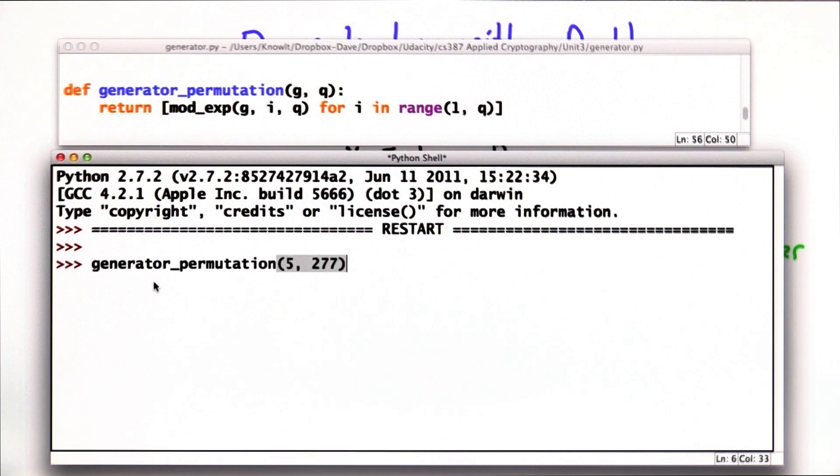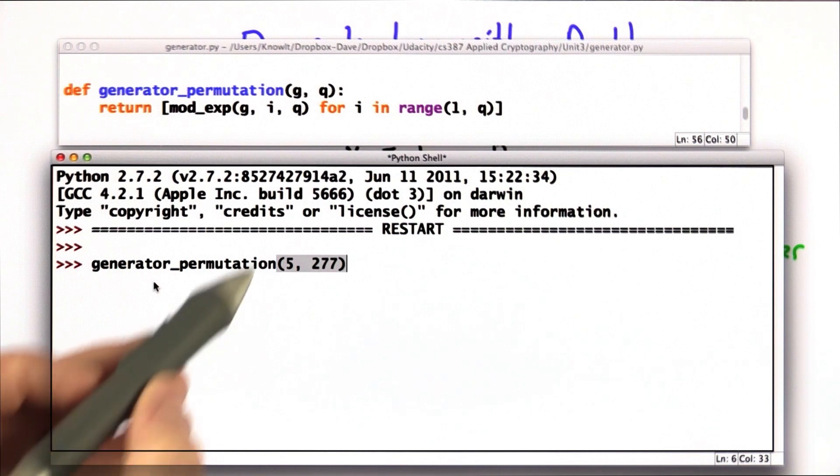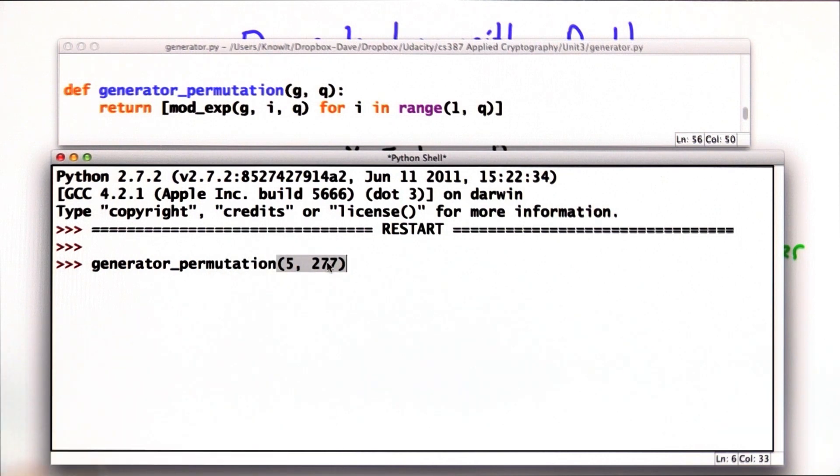We'll use 277 as our prime number, and 5 as a generator for 277. One could check that in a brute force way, just to show that it produces all the numbers, and we'll see that in the output for generator permutation.